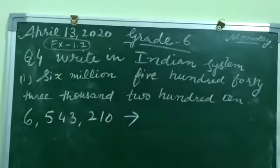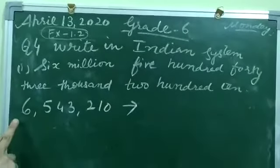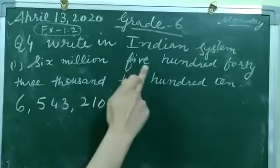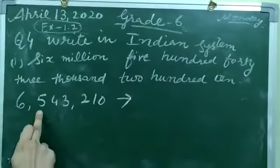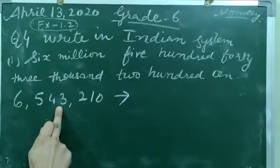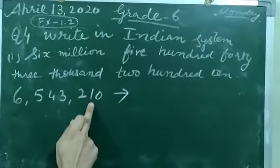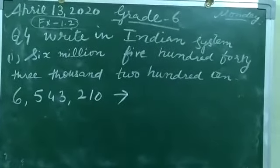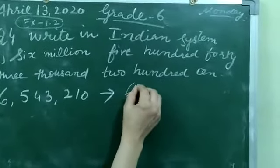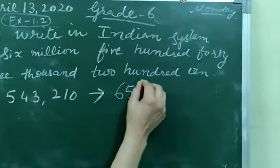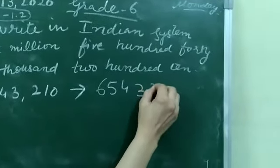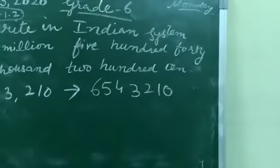6,000,000 — we will write 6 here. Then 543 right here. Then 210. This is according to the international system. After that, I will write the same number without commas.